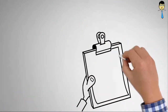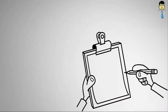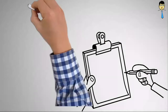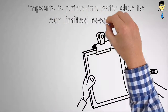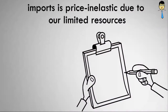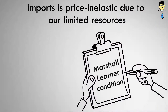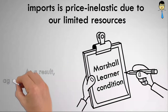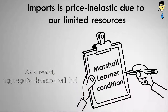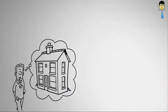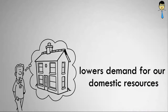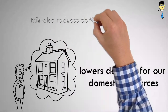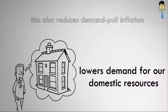This also causes export revenue to drop significantly. Even though our demand for imports is price inelastic due to our limited resources, the Marshall-Lerner condition is still satisfied and net exports will fall. As a result, aggregate demand will fall. This in turn lowers demand for our domestic resources such as labor and land, and this also reduces demand-pull inflation.